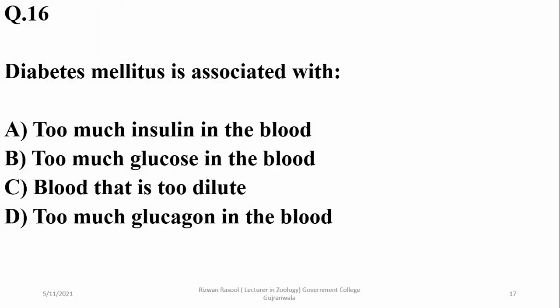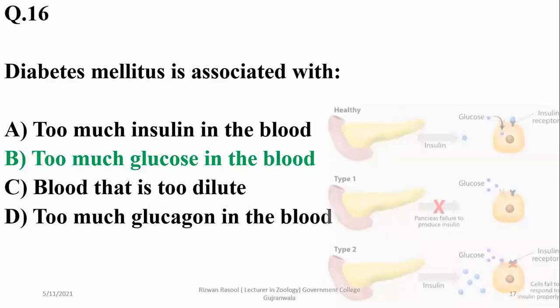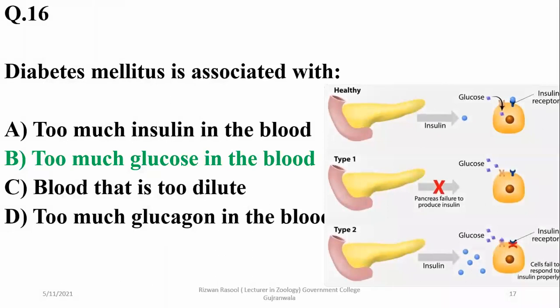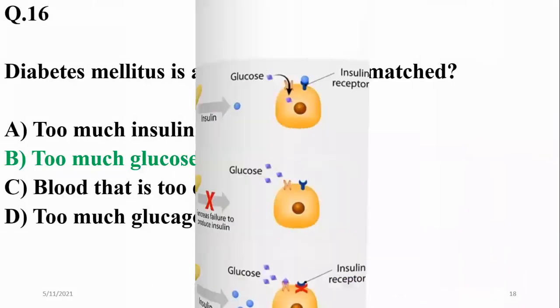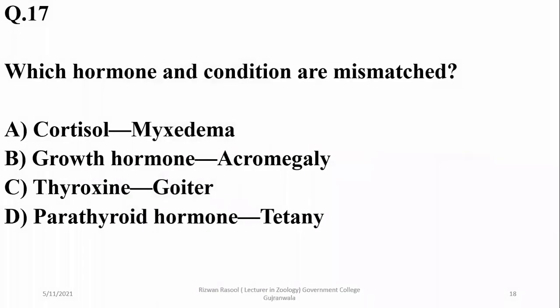Diabetes mellitus is associated with too much glucose in the blood — answer B. Which hormone and condition are mismatched? Cortisol does not cause myxedema; it is not related to myxedema.